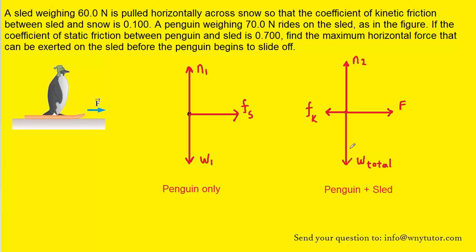Next, we have the free body diagram for the penguin plus sled, and most of the forces are quite similar. We have the weight of the penguin and sled acting downward — labeled as total weight. We have a normal force pushing upward, the applied force propelling them to the right, and kinetic friction pointing to the left, because the sled is sliding along the snow.